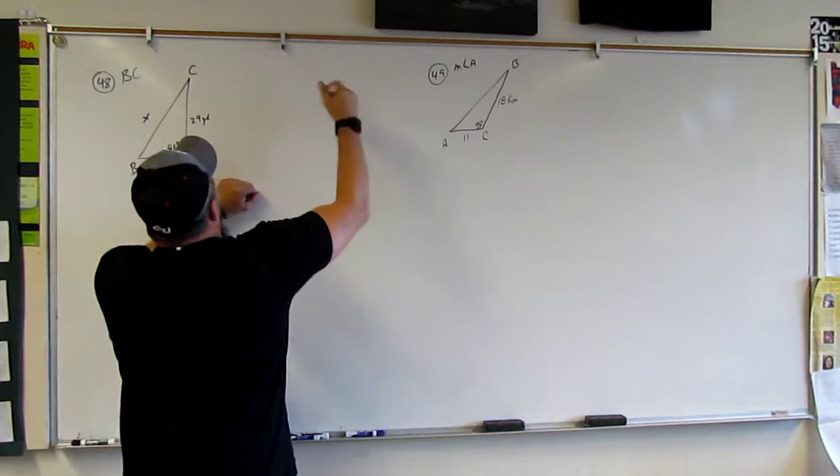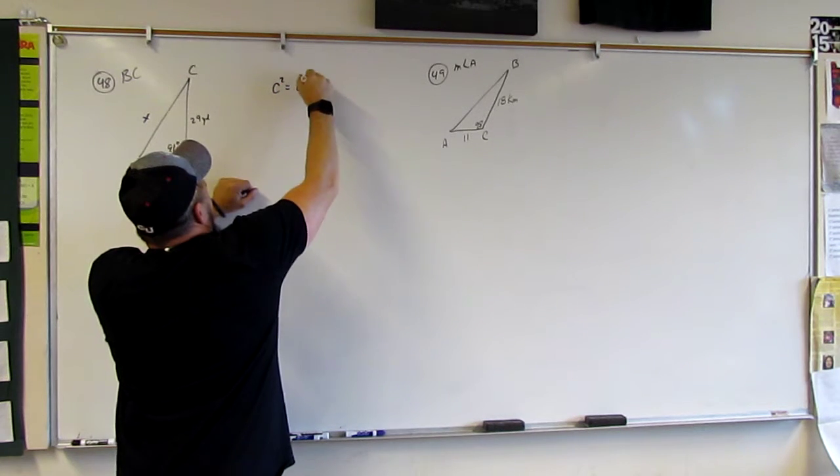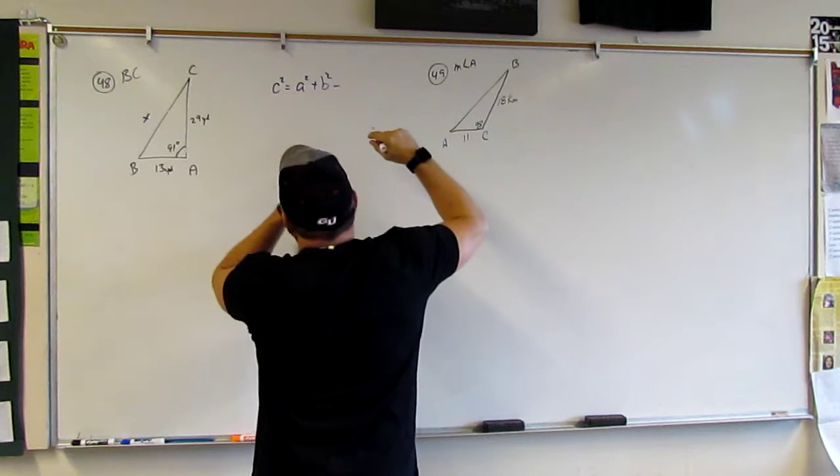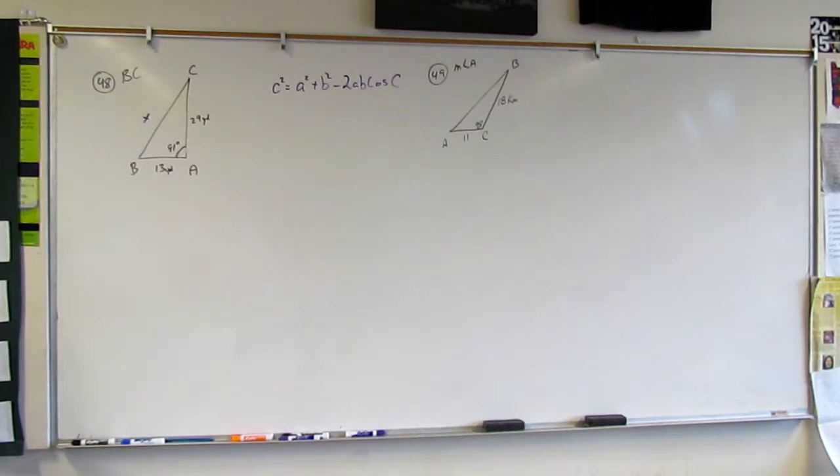Because if we do, we say it's C squared is equal to A squared plus B squared minus 2AB cosine C. Right? That's my law of cosines. Since I don't know two angles, I kind of need to use law of cosines here. This seems like it's just law of cosines right here. So, let's just do it.